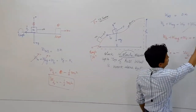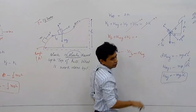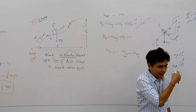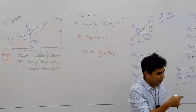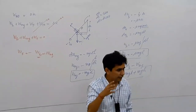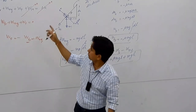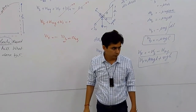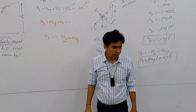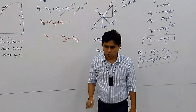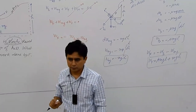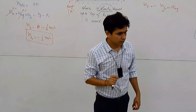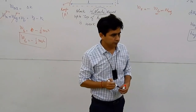The second important thing is to pay attention to the word 'slowly.' This tells you that delta k equals zero throughout the motion, which is the key condition that allows you to solve the problem using the work-energy theorem.